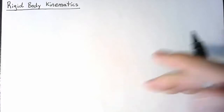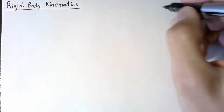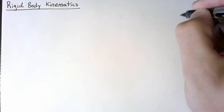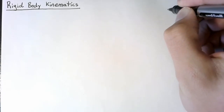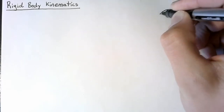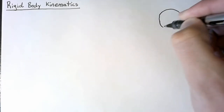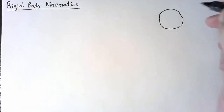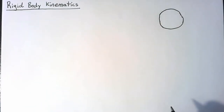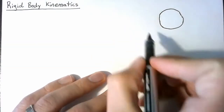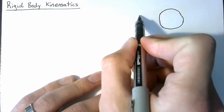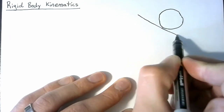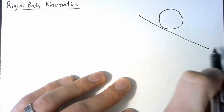Kinematics is the first step in trying to analyze our new systems, and for rigid bodies, we need to not only think about the movement, but also how things rotate. One of the canonical problems here is a ball, sphere, or cylinder rolling down a hill.